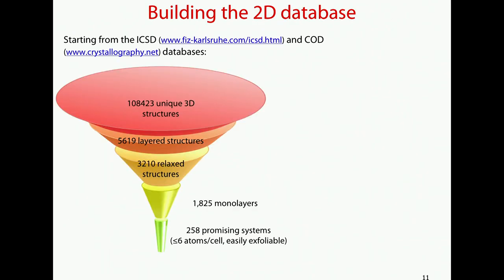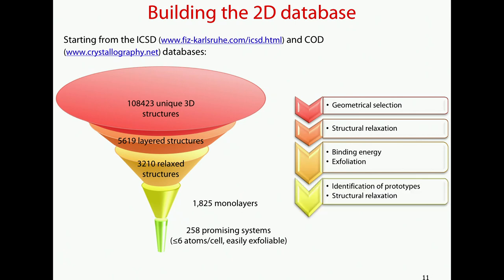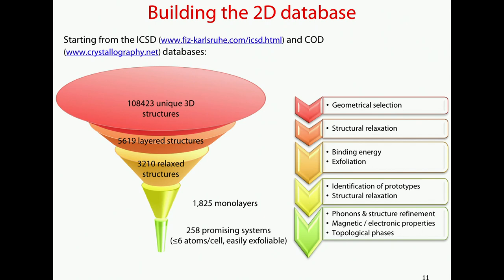Let me summarize where we are up to now. We have done the geometrical selection on more than 100,000 structures from external databases, giving 5,600 layered structures. More than half of them have been relaxed; others are still ongoing or are much bigger and more complicated. We then computed the binding energies, exfoliated them, and ended up with 1,800 monolayers. We can go further with these by identifying prototypes, doing structural relaxation, and computing properties on the most promising materials.